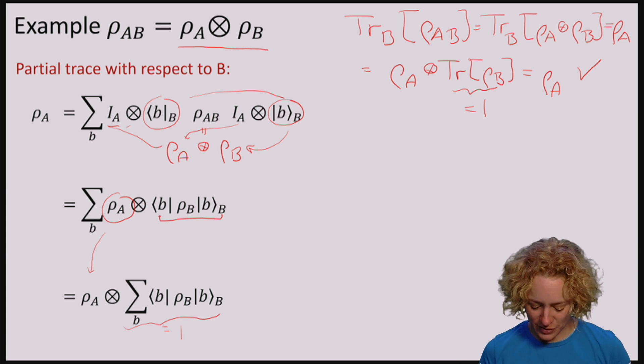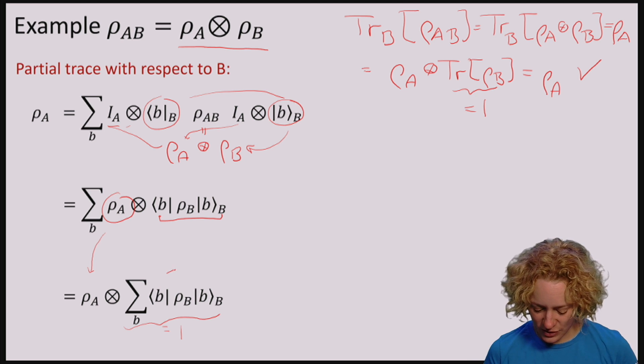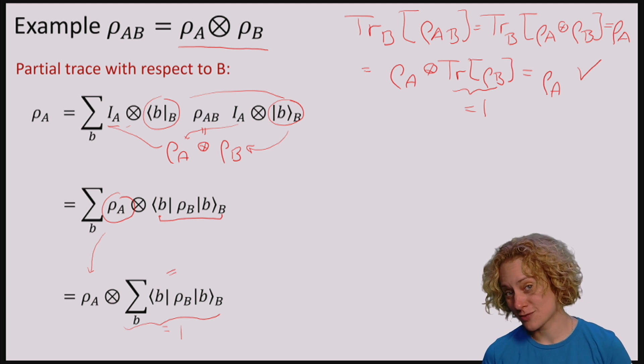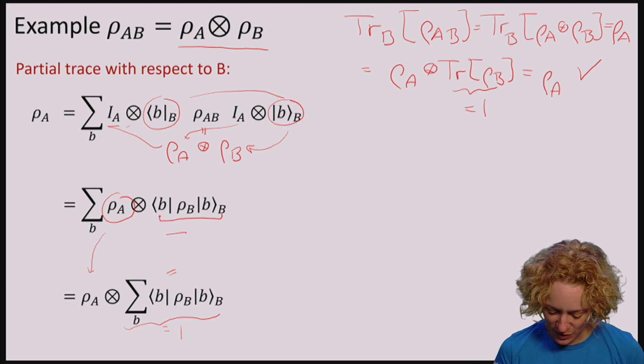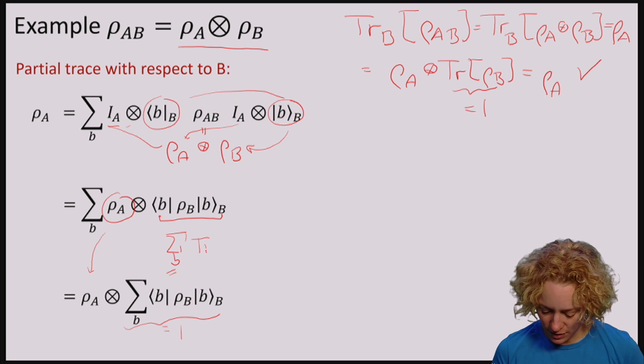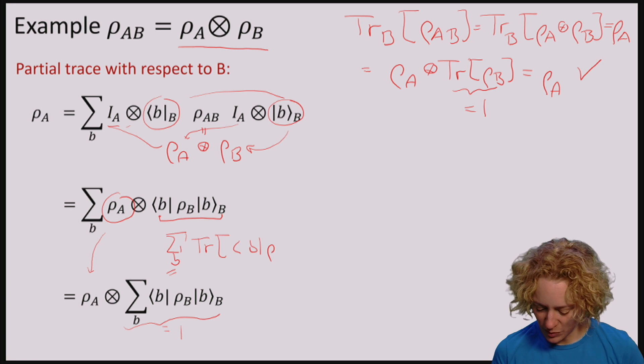And one way to convince yourself of this is actually to use the fact that the trace is cyclic in reverse. So let me write this here as the sum over B, the trace of this term, because remember the trace of a number is just a number.